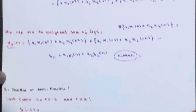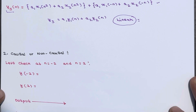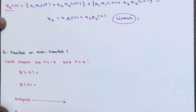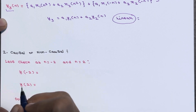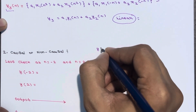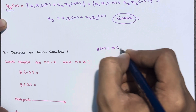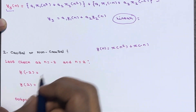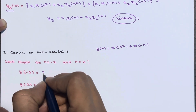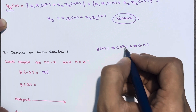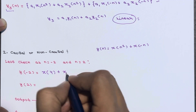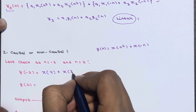Now let's check whether the system is causal or non-causal. We check at n equals minus 2 and n equals 2. At n equals minus 2, y of minus 2 becomes x of minus 2 squared, which is x of 4, plus x of minus of minus 2, which is x of 2.